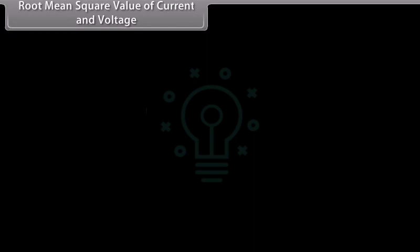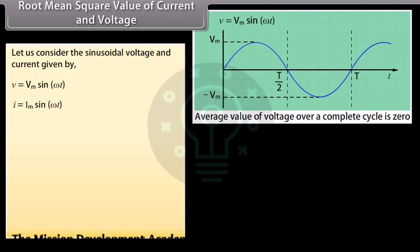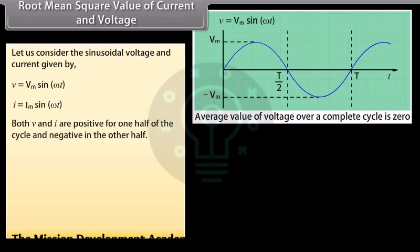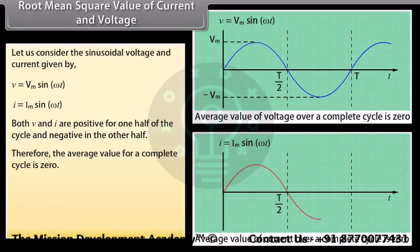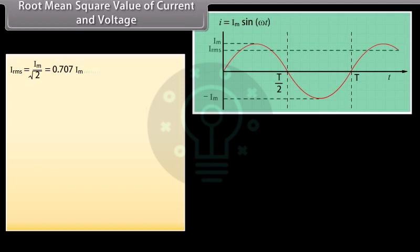Root mean square value of current and voltage: considering sinusoidal voltage V = Vm sin(ωt) and current I = Im sin(ωt), both V and I are positive for one half of the cycle and negative in the other half, so the average value over a complete cycle is zero. The root mean square (RMS) current is Irms = Im / √2 = 0.707 Im.